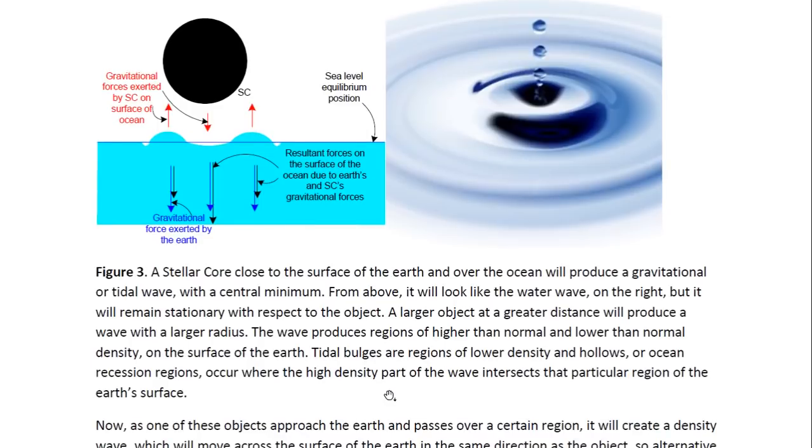The wave produces regions of higher than normal and lower than normal density on the surface of the Earth. So this high tide ring, the tidal bulges in this form of the ring, will be a region of low density of water. And this region producing this hollow here, and that's an ocean recession event, will be a region of higher density of water.